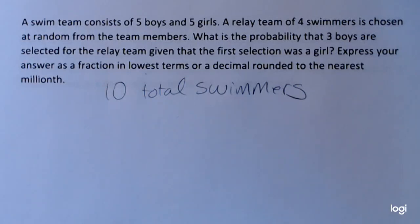This video is an example of using the multiplication rule for probability. A swim team consists of five boys and five girls. A relay team of four swimmers is chosen at random from the team members. What is the probability that three boys are selected for the relay team given that the first selection was a girl?